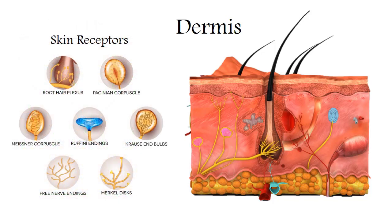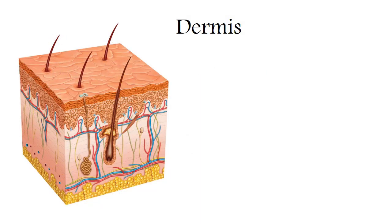In the dermis there are also many different receptors that perceive irritation from the outside, and each type of receptor specializes in its type of irritation. Thanks to them, a person can distinguish between pain, temperature, touch, and pressure. The sensitivity of the receptors is also not constant, but varies under the influence of various factors such as the time of day, the degree of fatigue, and some others. In this layer, unlike the epidermis, we can find many blood and lymphatic vessels. There are also sweat and sebaceous glands, which secrete sweat and sebum on the surface of the epidermis respectively.